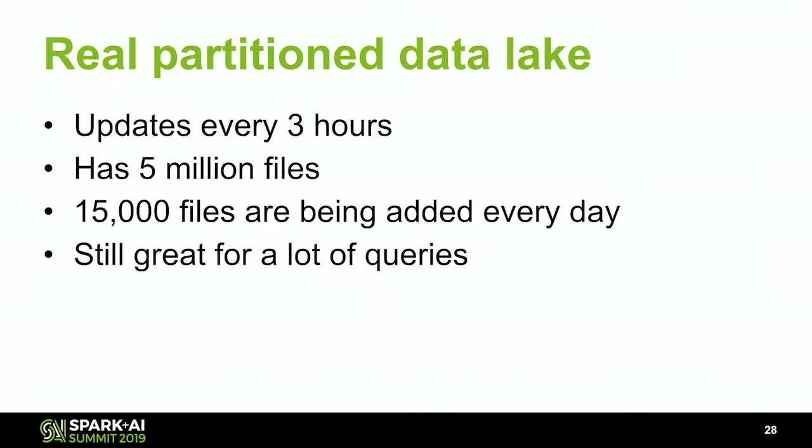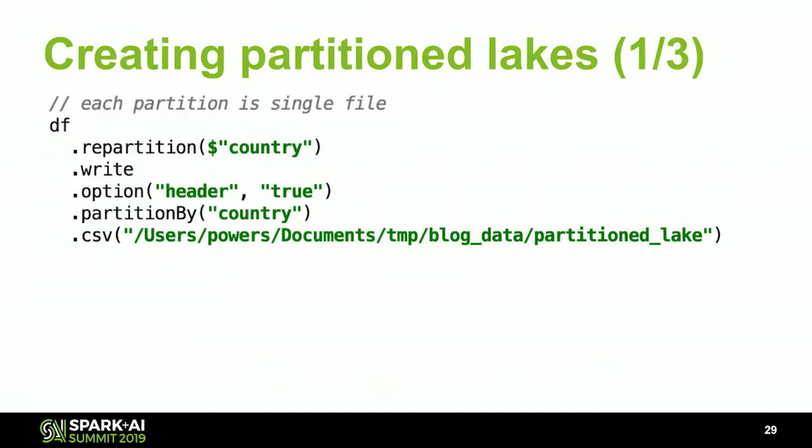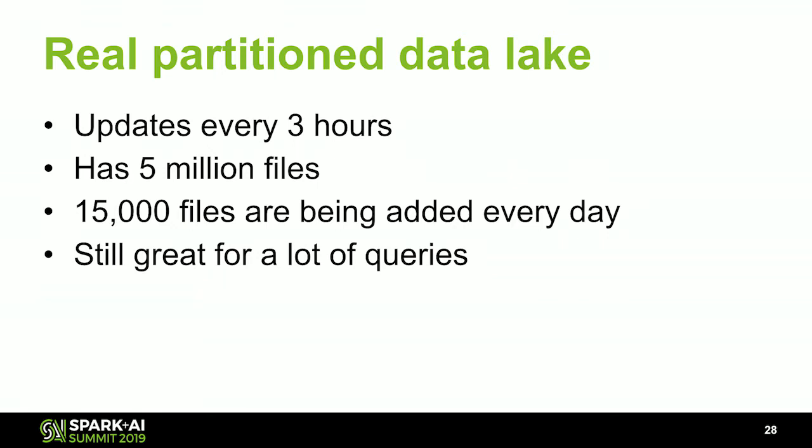Let's look at a real partition data lake and get an idea of the scope of the small file problem when you're incrementally updating in production. Our production partition lake has about 20,000 partitions, is updated every three hours, and has about five million files with about 15,000 files being added on a daily basis. It's still great for a lot of queries, but a ton of small files are being added every day — a small new chunk of data gets separated into potentially 20,000 different files per update. Creating a sustainable solution to this small file problem is particularly important for a partition data lake.